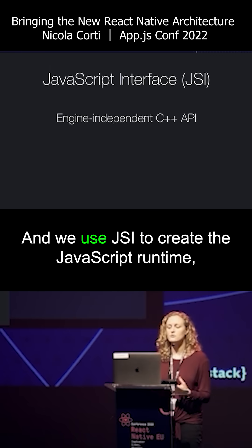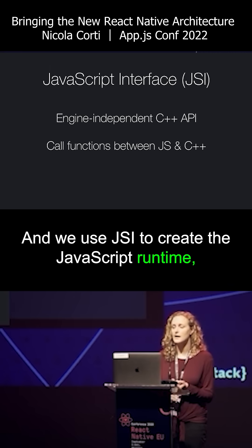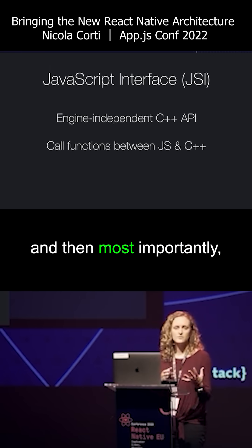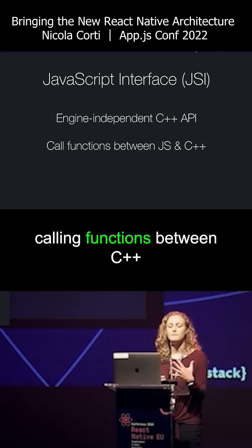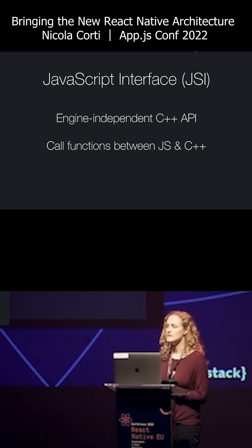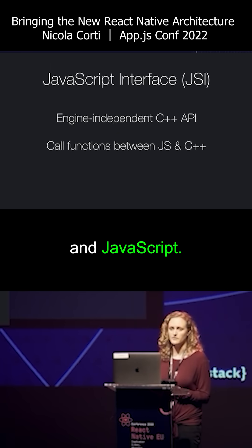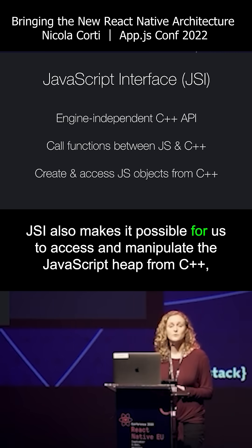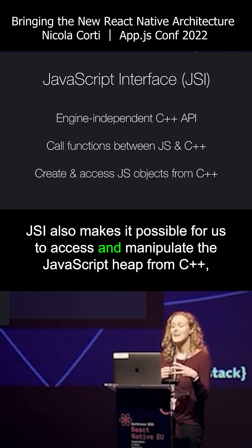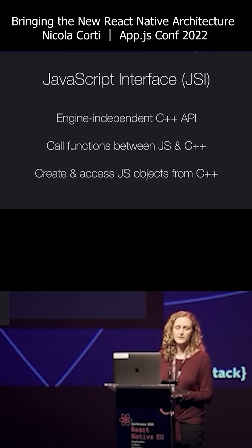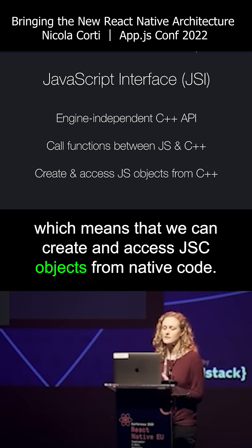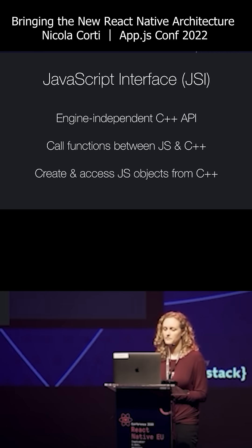We use JSI to create the JavaScript runtime, load the JS bundle, and most importantly, calling functions between C++ and JavaScript. JSI also makes it possible for us to access and manipulate the JavaScript heap from C++, which means that we can create and access JS objects from native code.